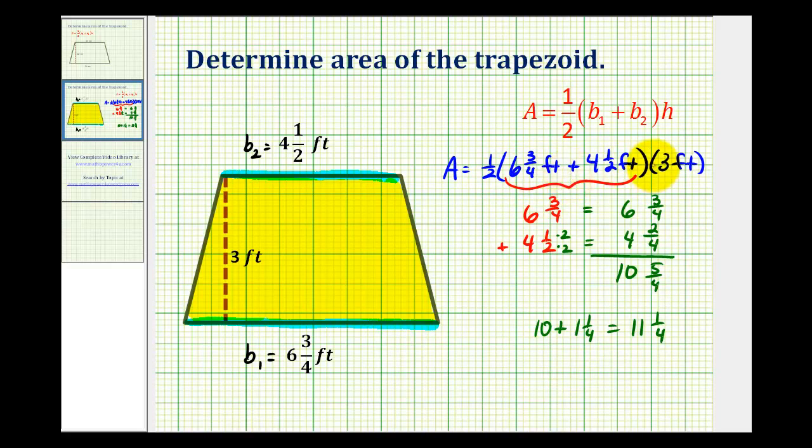But because we have a product that involves a mixed number, we will have to convert this to an improper fraction. So eleven and one fourth is going to be equal to four times eleven which is forty-four plus one. So forty-five fourths. So this sum here is equal to forty-five fourths.